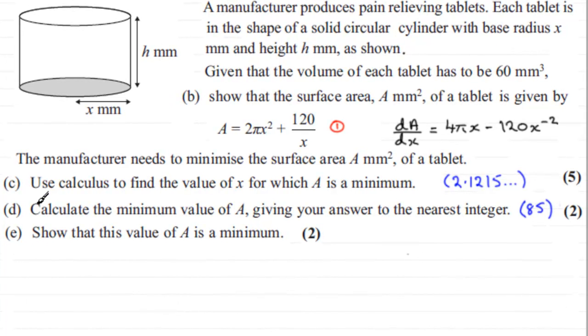Hi. In the previous part of this question, Part D, we calculated the minimum value of A and found that to the nearest integer it was 85. In this next part, Part E, we've got to show that this value of A is a minimum.